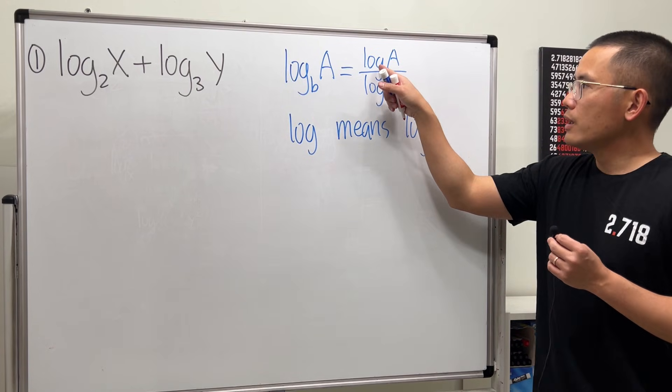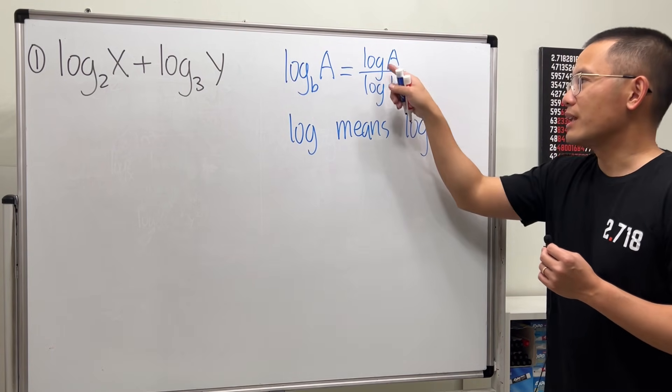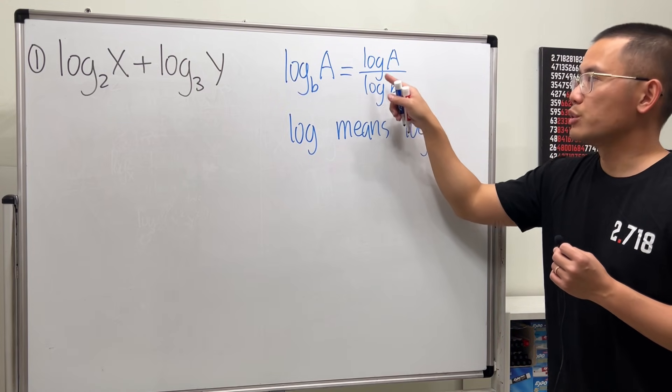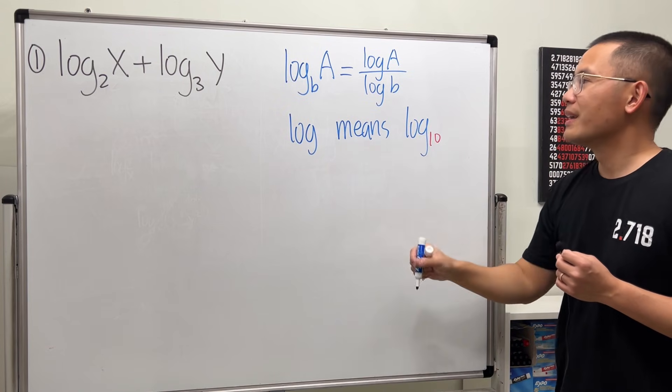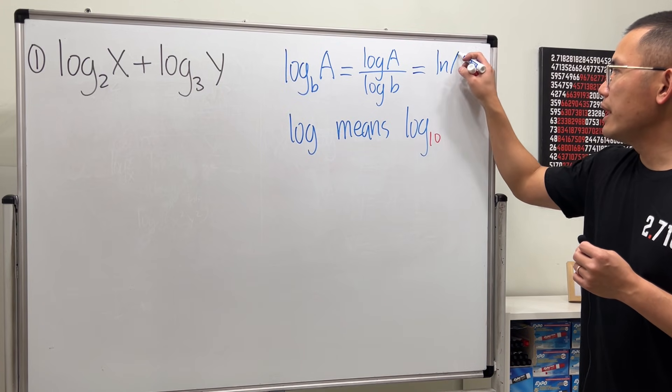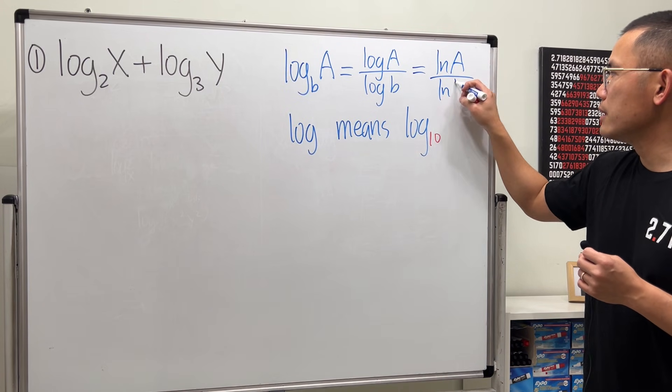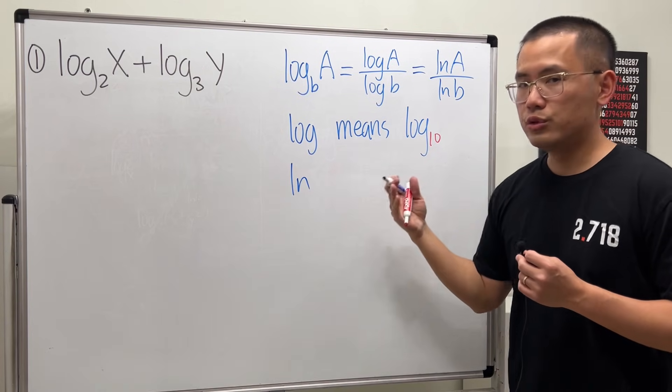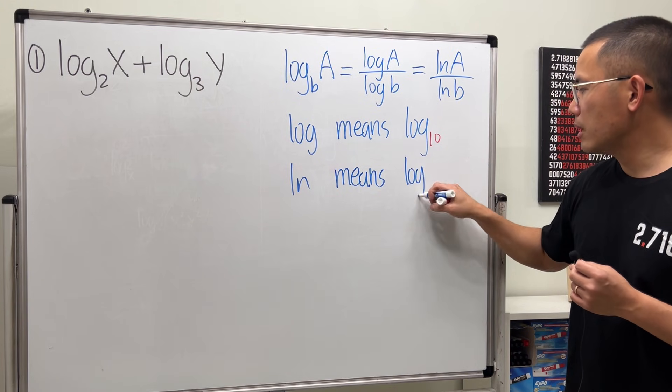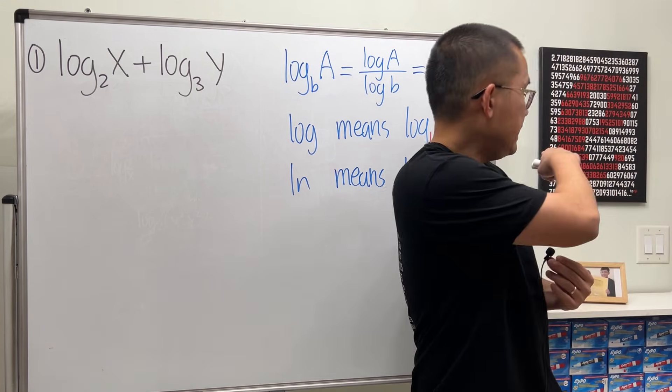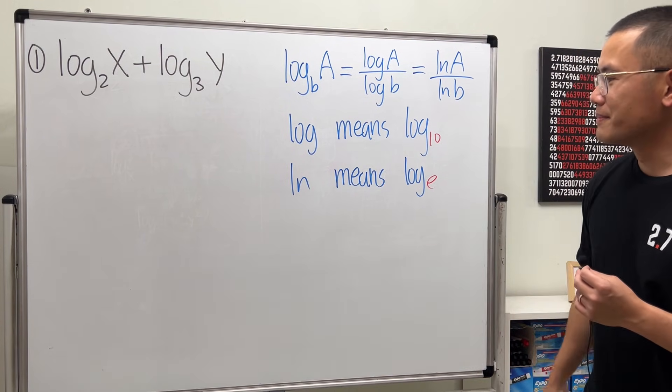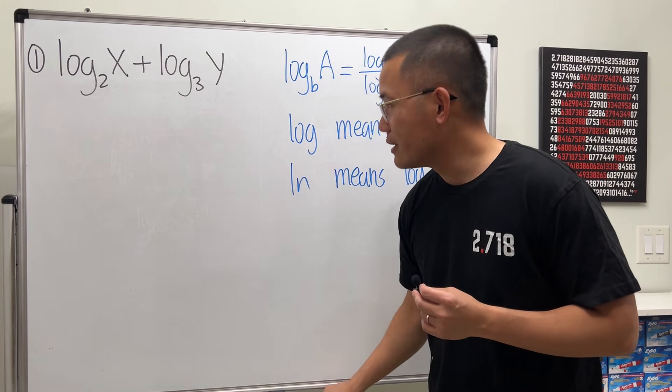I put base 10 so that we can use a calculator, but you can actually use a different base, as long as it matches with this one. So you can do log base 2, log base 2. Another common log that we use is the natural logarithm. So we can also say ln A over ln B. Ln stands for natural log, which means log base e, and e is approximately 2.718 and all that.